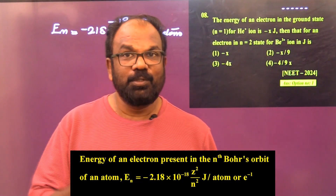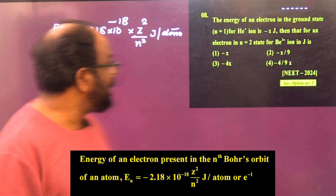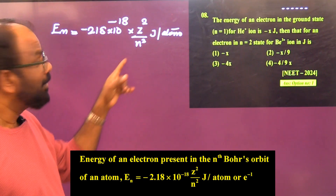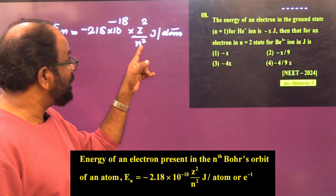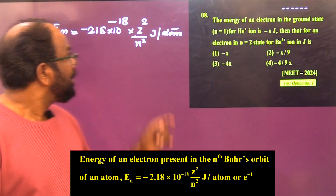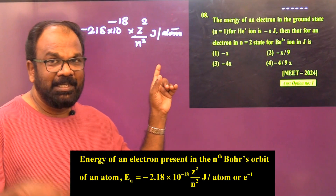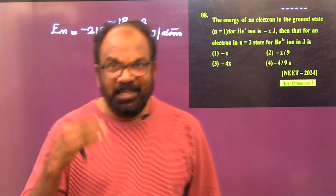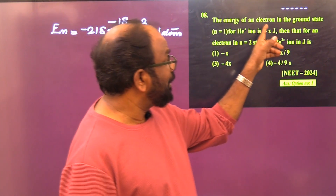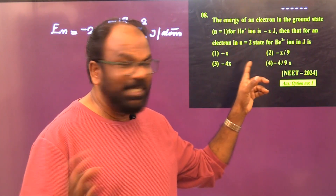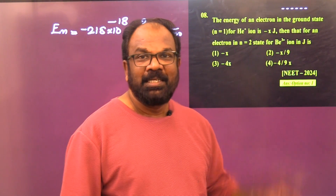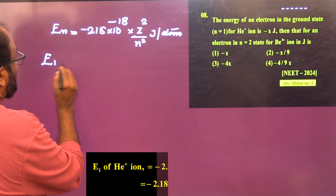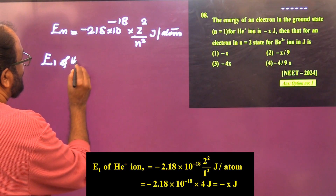We know the energy of an electron in the nth Bohr orbit of an atom is En = −2.18 × 10⁻¹⁸ × z²/n² joules per atom, where z is the atomic number and n is the principal quantum number. In this question, the energy of an electron in the ground state of He+ ion is given as −x joules.